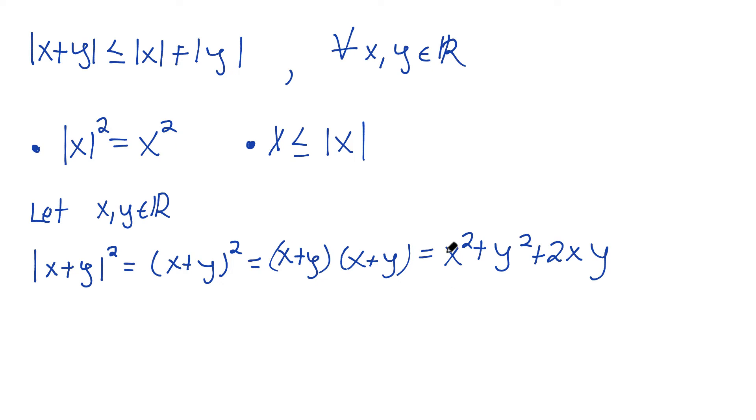Why am I doing this? Now I'm going to use my second bullet point here. This is going to be less than or equal to—well, I'm not going to change these, maybe I will in a second. But the absolute value here will bound x and y. So x is less than or equal to its absolute value.